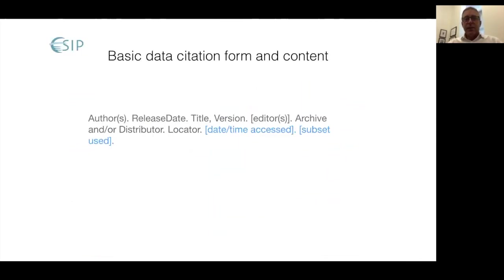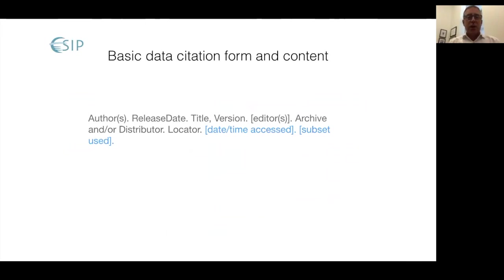I want to go back to this notion of this basic data citation form and content. It's very much the same as a literature citation. This comes from the ESIP guidelines. But there are two things at the end I'd like to highlight. The date and time it was accessed, which is often a common practice when citing a URL. And we recommend that even when citing a digital object identifier or other persistent identifiers, because in some cases the data may have changed and that versioning may not have been captured. We also recommend that you mention the subset of the data that you use — for example, if you extracted a geographic subset or a temporal subset of the data. But frankly, those are imperfect hacks for how we would really like to do this.